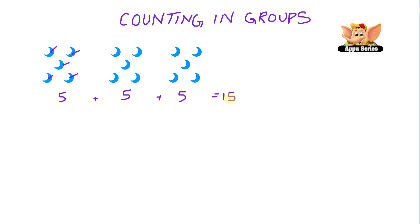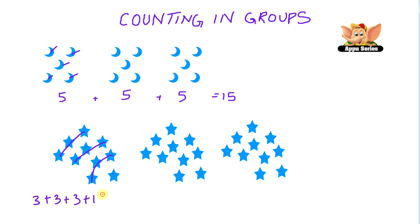Now let's see another example. How many stars are here? Less than twenty or more than twenty? There are three plus three plus three plus one, so that makes three plus three plus three plus one - that gives us ten stars.